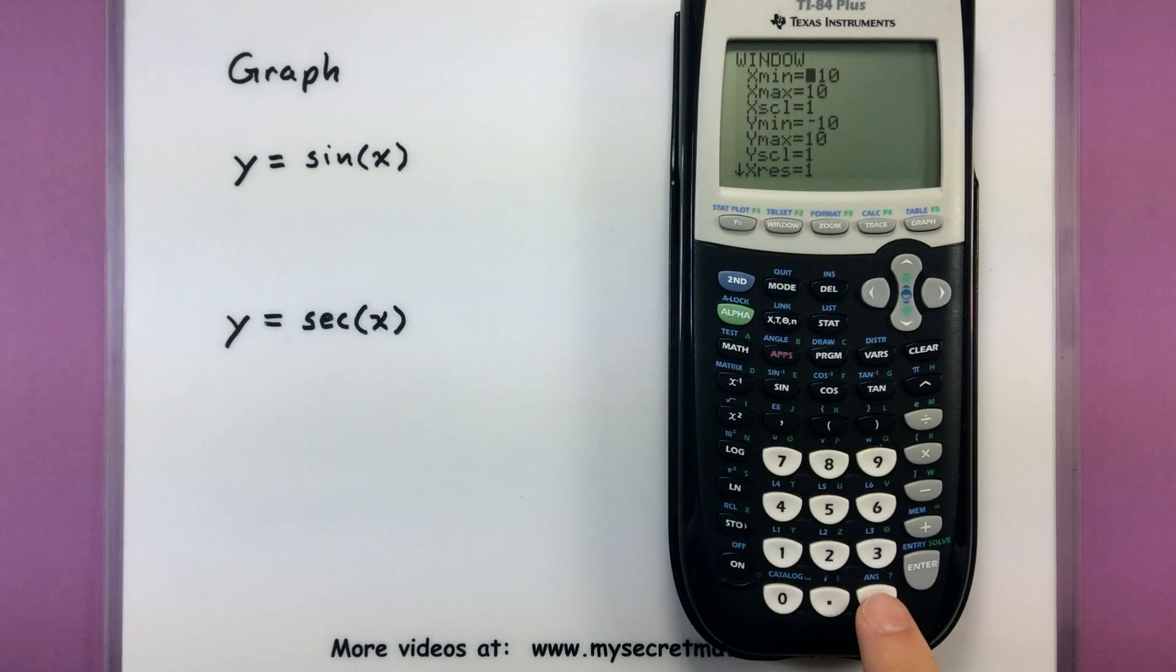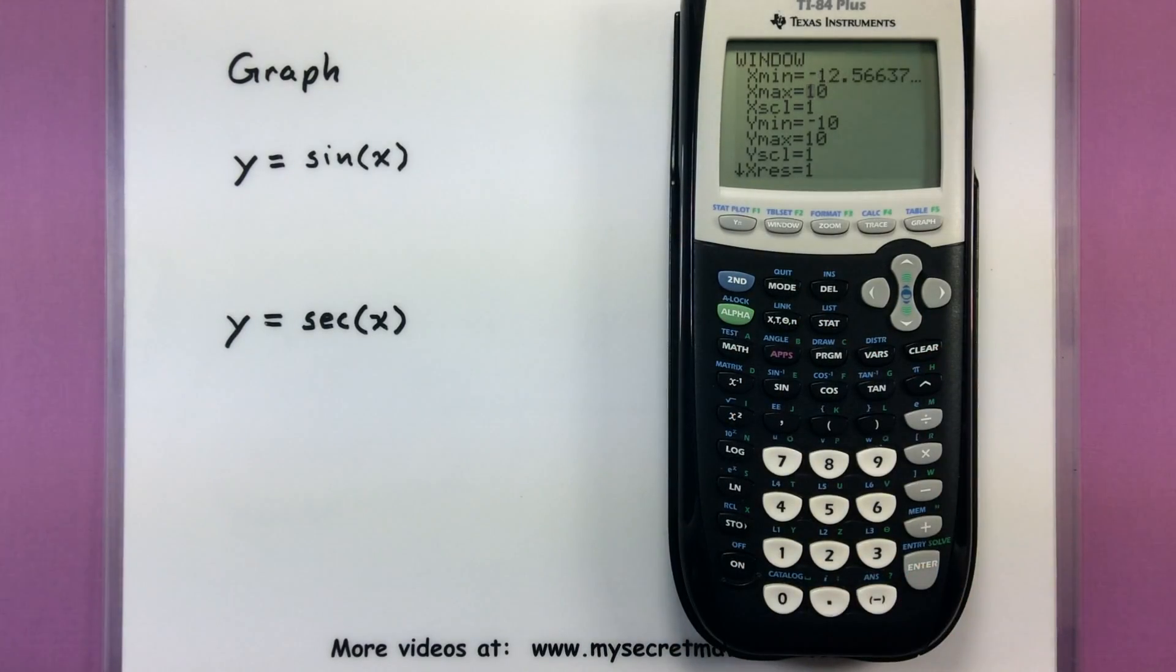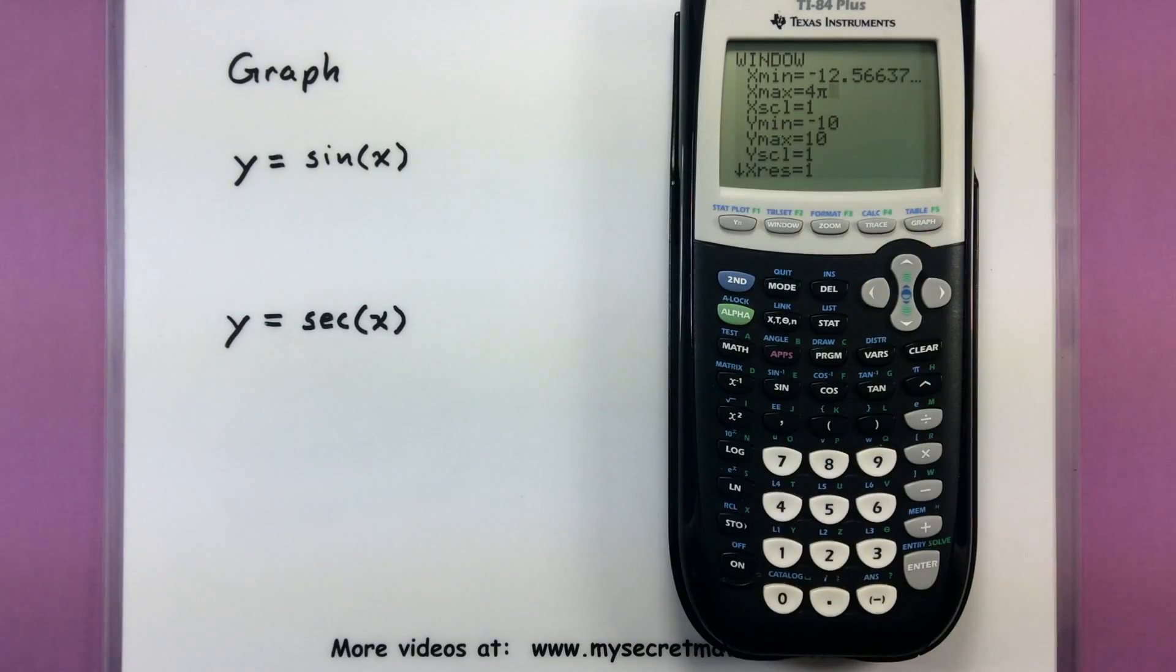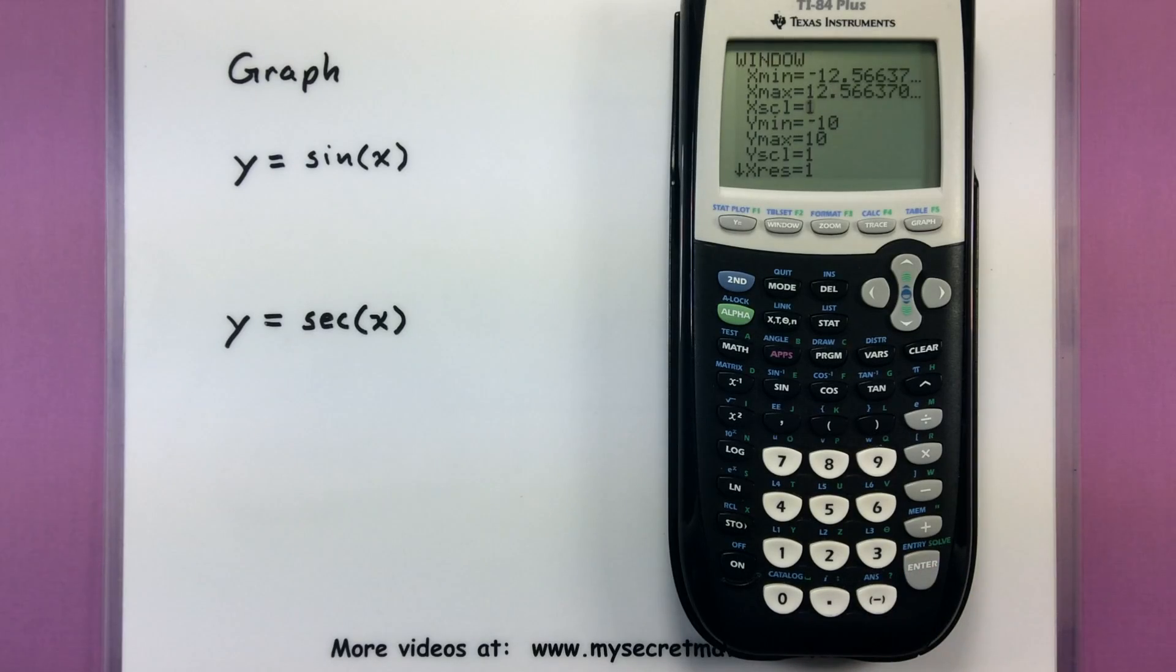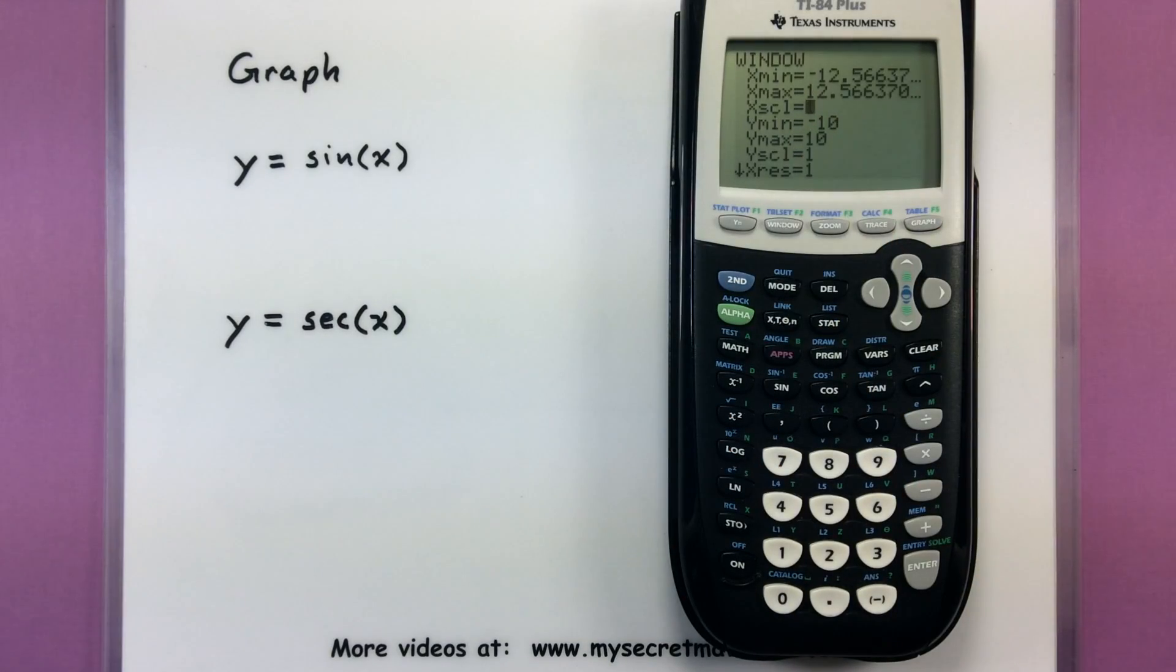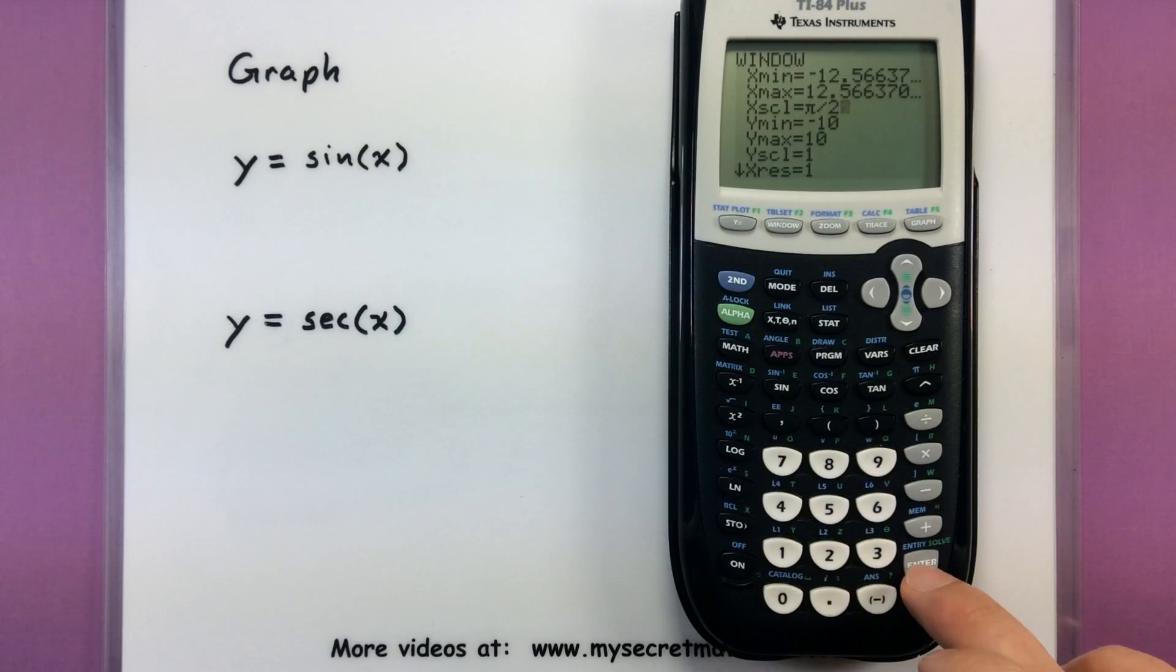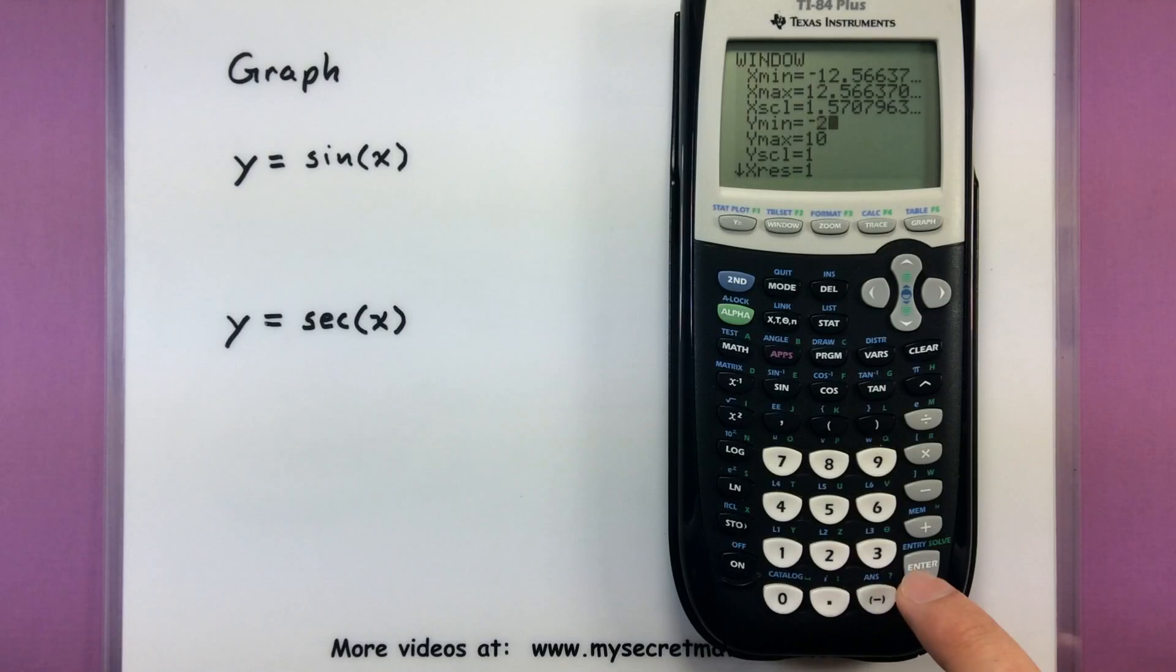Since I'm dealing with radians, we need to adjust our window so that it can handle the normal period of our trigonometric function. Go ahead and find window. Let's go ahead and make some adjustments. We'll go from the x-minimum to negative 4π and all the way up to 4π. Notice how I'm actually able to type in 4π and the calculator just simply converts that to a decimal. For our scale, let's set this for π divided by 2.